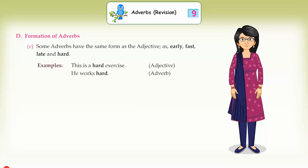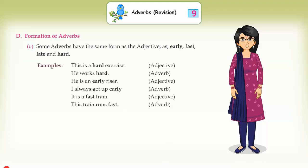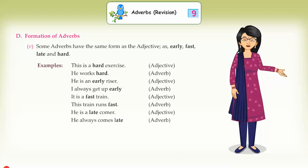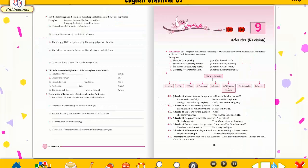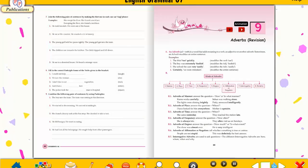Examples of rule 5 — same form as adjective: 'This is a hard exercise' (adjective) / 'He works hard' (adverb). 'He is an early riser' (adjective) / 'I always get up early' (adverb). 'It is a fast train' (adjective) / 'This train runs fast' (adverb). 'He is a late comer' (adjective) / 'He always comes late' (adverb).